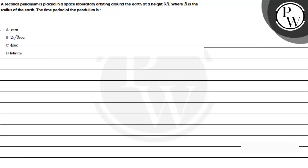Hello, let's read the given question. The question is: a seconds pendulum is placed in a space laboratory orbiting around Earth at a height of 3r, where r is the radius of the Earth. The time period of the pendulum is: option a, 0; option b, 2√3 seconds; option c, 4 seconds; option d, infinite.